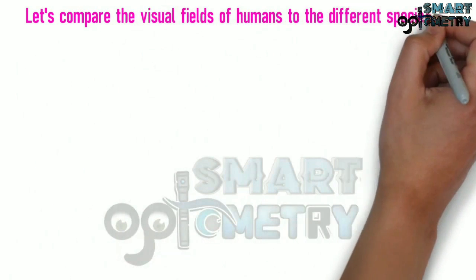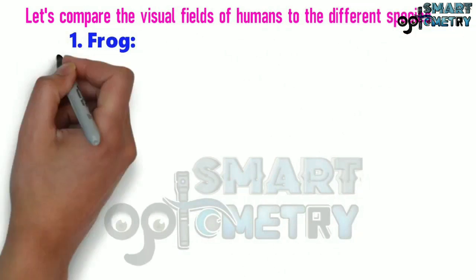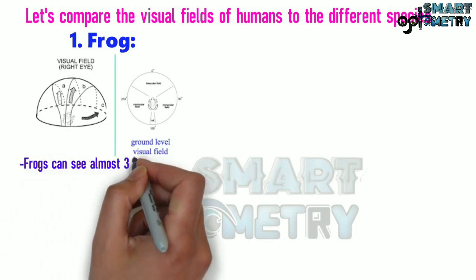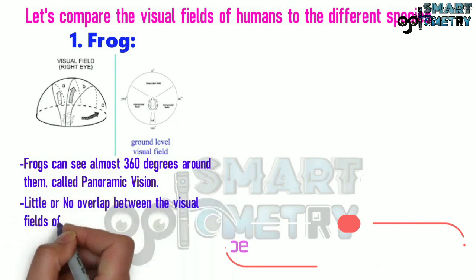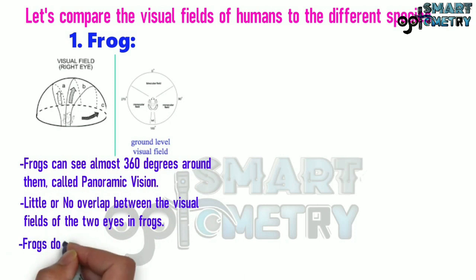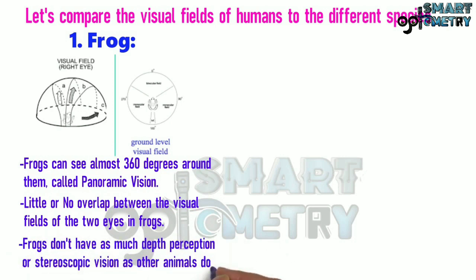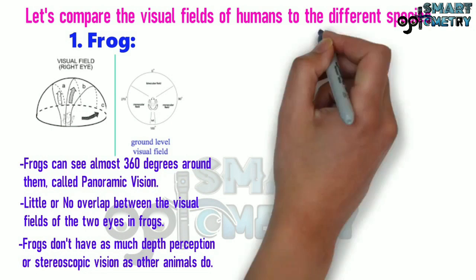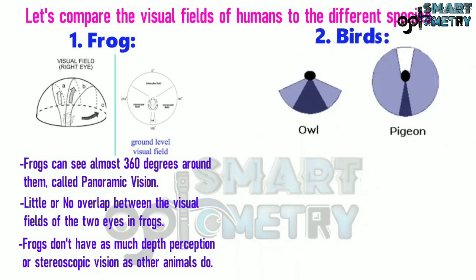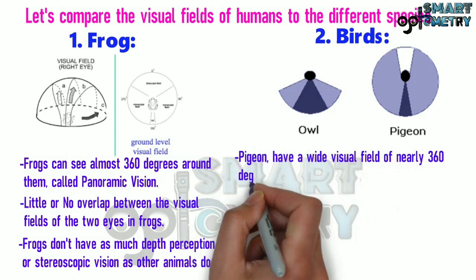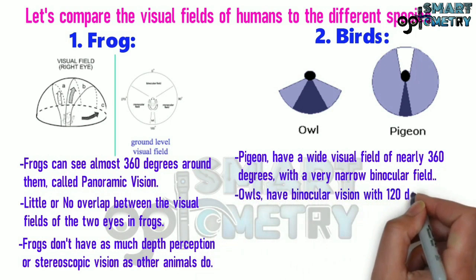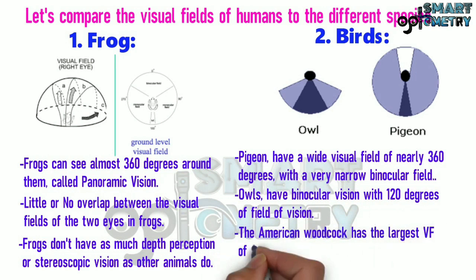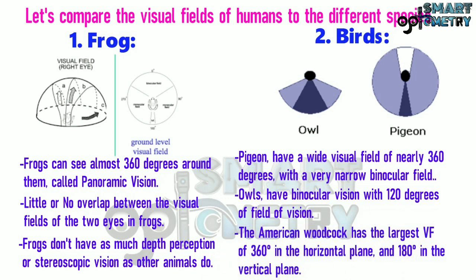Let's compare the visual fields of humans to different species. Frogs can see almost 360 degrees around them — this is called panoramic vision. There is little or no overlap between the visual fields of the two eyes in frogs, so they don't have much depth perception or stereoscopic vision. Pigeons have a wide visual field of nearly 360 degrees with a very narrow binocular field. Owls have binocular vision with 120 degrees of field of vision. The American Woodcock has the largest visual field of 360 degrees horizontally and 180 degrees vertically.